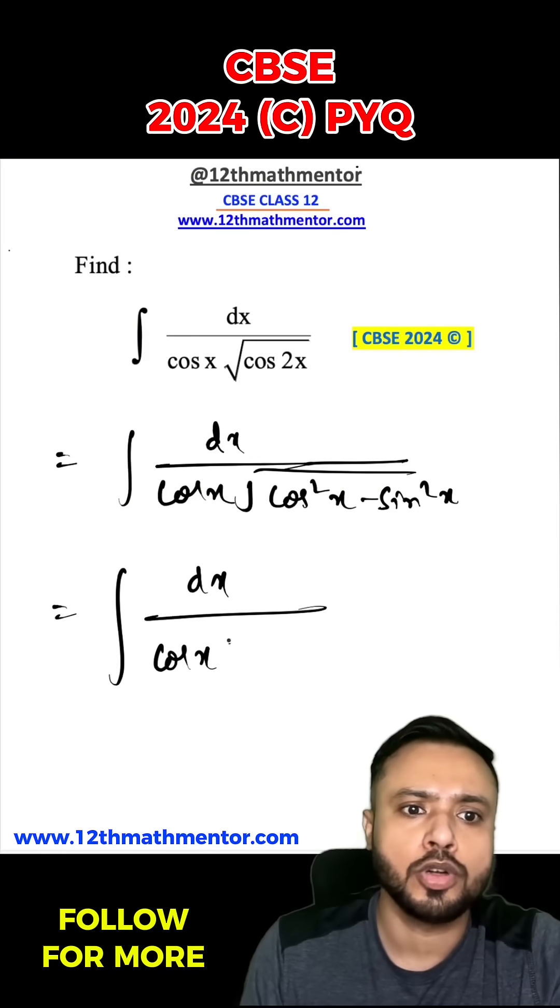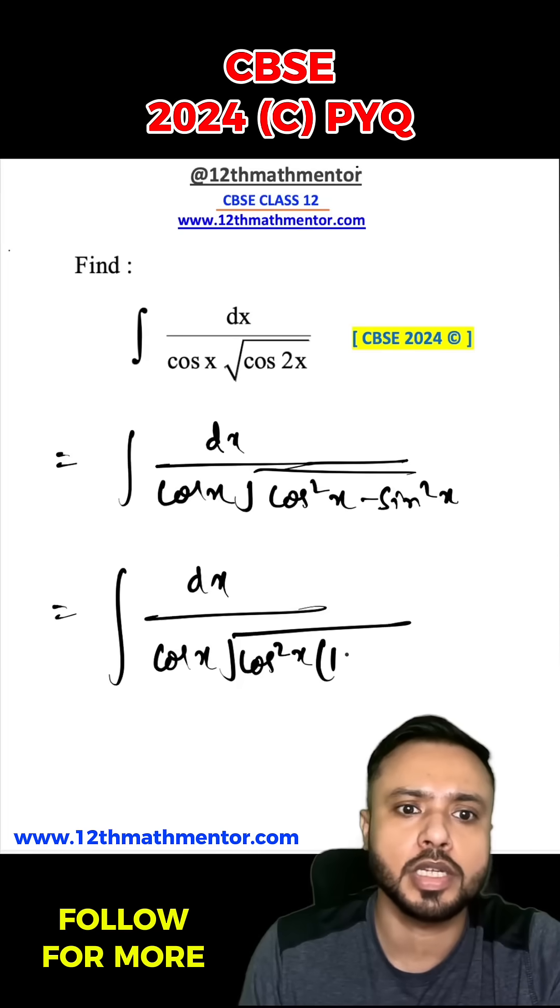Now to solve it further, I'm going to take cos²x common inside the root. So I'll be left with cos²x times (1 minus sin²x by cos²x).